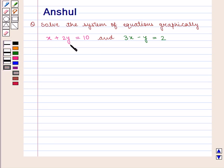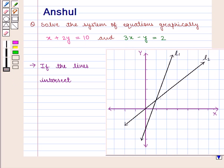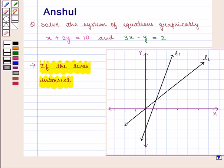The equations are x plus 2y is equal to 10 and 3x minus y is equal to 2. Now we know that if the lines intersect, that is if two lines L1 and L2 are intersecting lines, then there exists a unique solution.